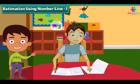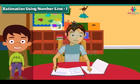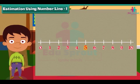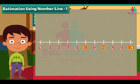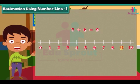Estimation using number line. Let us try something interesting. On screen you see a number line from 0 to 10. Can you guess the position of number 5 on this line? Yes, it will be in the middle of the line. The position of number 3 will be between 0 and 5, and number 7 will be between 5 and 10. Let us add 3 and 6 — by adding 3 and 6 we get 9, and the position of 9 will be near to 10.